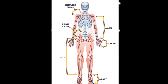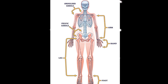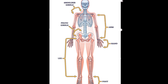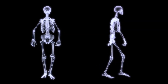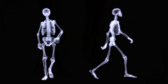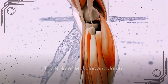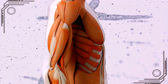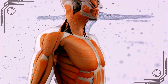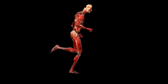On the other hand, the appendicular skeleton consists of the bones of the limbs, together with the pelvic and pectoral girdles. These bones are responsible for movement and interaction with our environment. Now, imagine the skeleton as a series of levers, and the muscles as the forces that act on these levers to cause movement. Muscles are attached to bones by tendons, and when they contract, they pull on the bones, causing them to move.